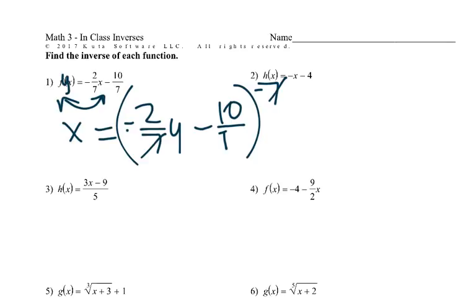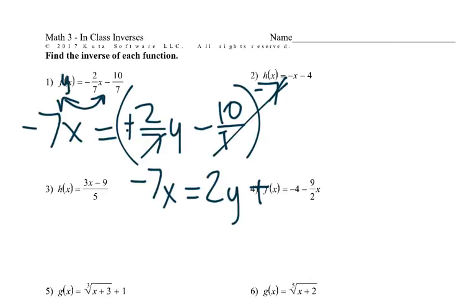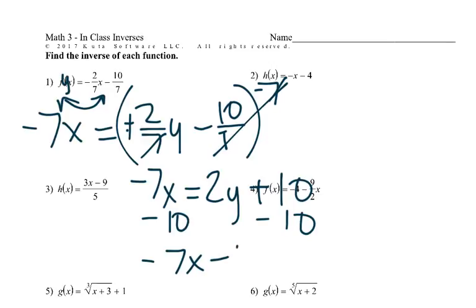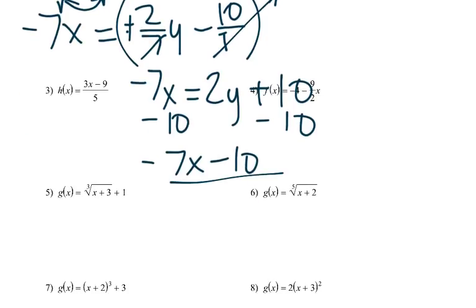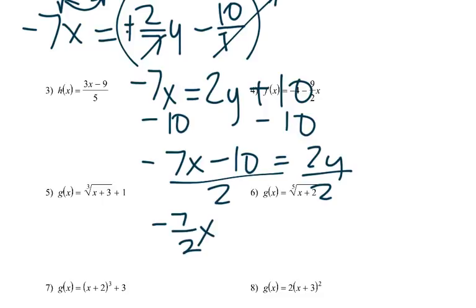Those 7s cancel — we times by negative 7 — so we get negative 7x equals positive 2y plus 10. Subtract 10, get negative 7x minus 10, then divide by 2 equals y. You can split it up or leave it together; in this case I'd split it up just because I can get a 5. So there's our inverse, which we write using inverse notation.